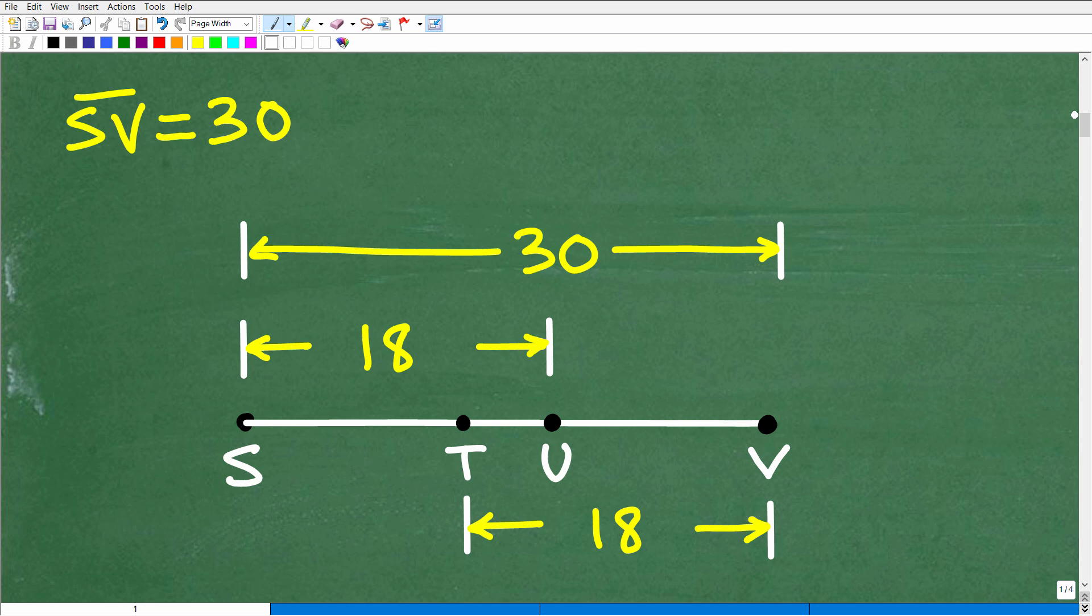Okay, so remember, the problem stated, or we're given this graph right here, this figure, and we want to find the distance TU. We express that as TU with that line, we want to find line segment TU, what that distance is. And we're also told that SV is equal to 30. So that distance from S, point S, and point V, you can see right here, is 30 units.